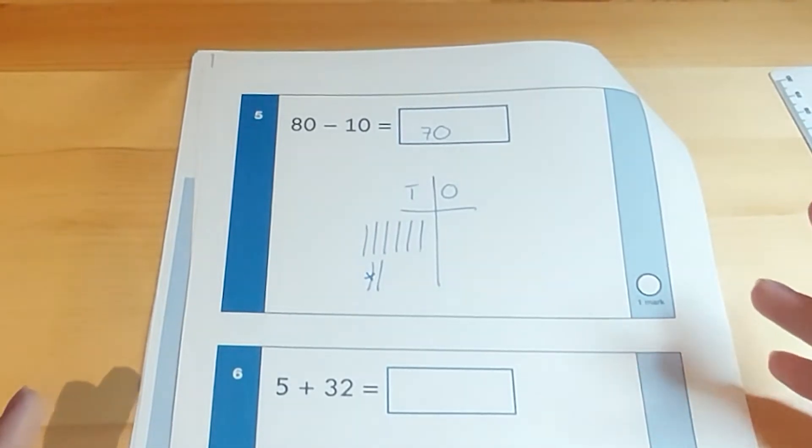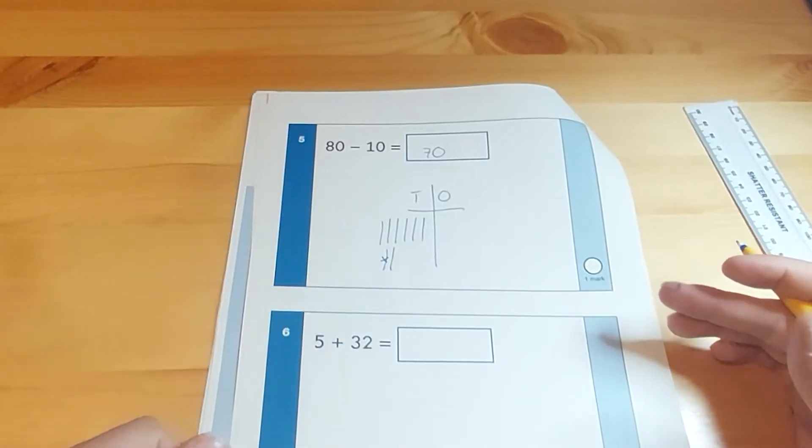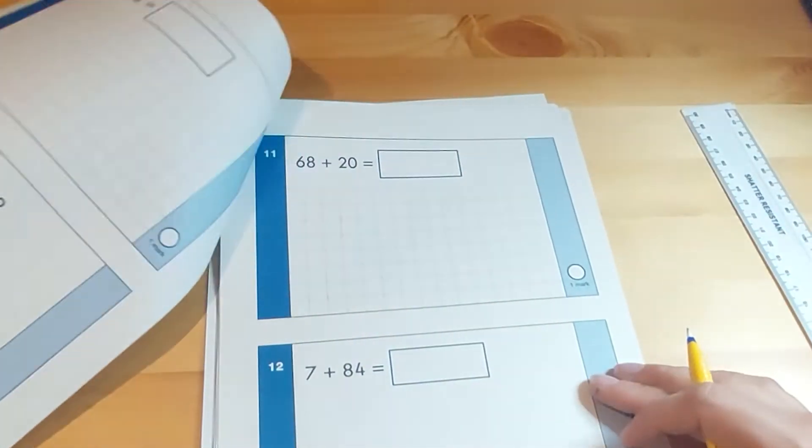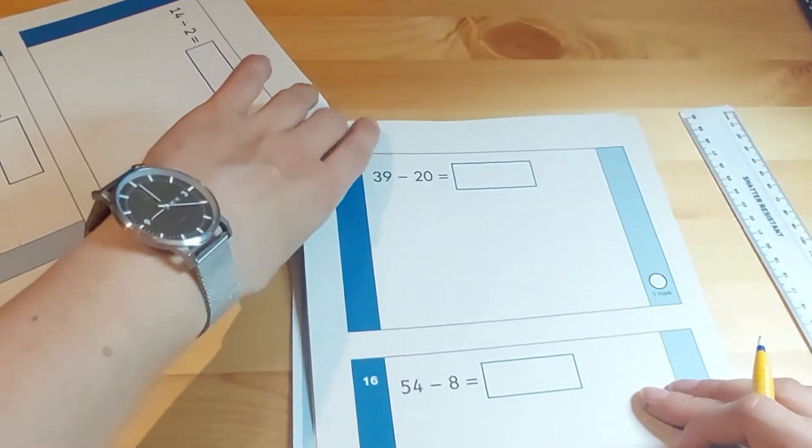So there are two ways there that you could do it. Counting back in tens is the way they should be able to do it in their head but if they're not at that stage yet there's also the written method. I'm going to skip these out because they're not subtraction questions. We come to another subtraction question on here.